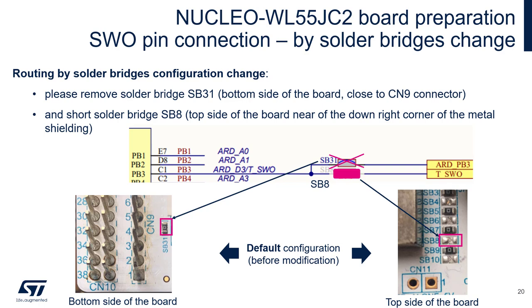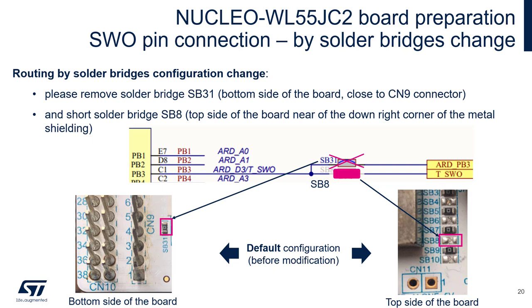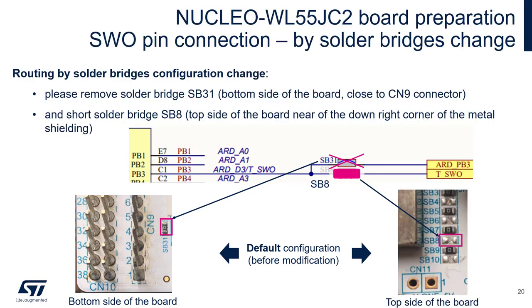Another option — not temporary but permanent — would be to use jumper modifications. We need to set jumper SB8, which is located on the top side of the board very close to the CN11 field and on the right side of the microcontroller shield. We also need to remove jumper SB31, located on the bottom side of the board just to the right of the CN9 connector. By doing this, SWO will be connected to PB3 with no need for additional wires.